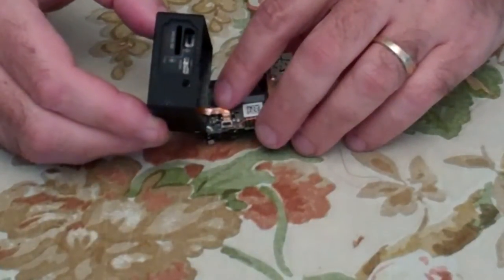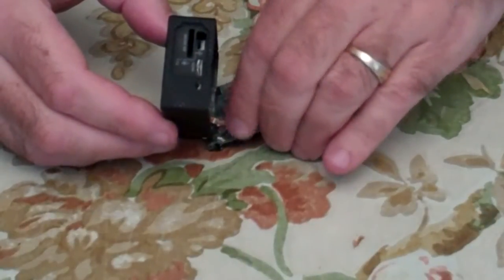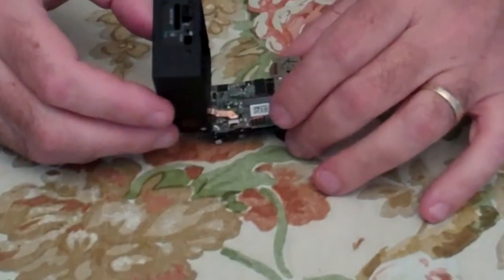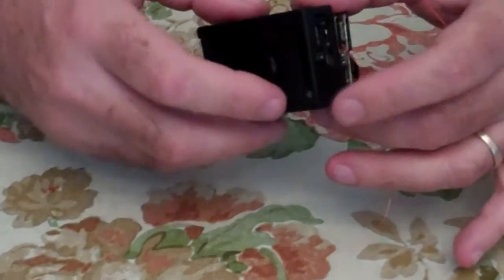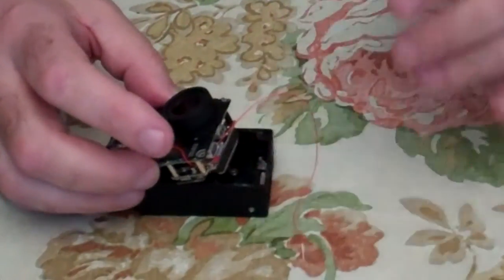As soon as we get it in, we're going to close the latch. That puts pressure on it so that it can't slide out. Then, we're going to route these wires through the hole that we created in the chassis.